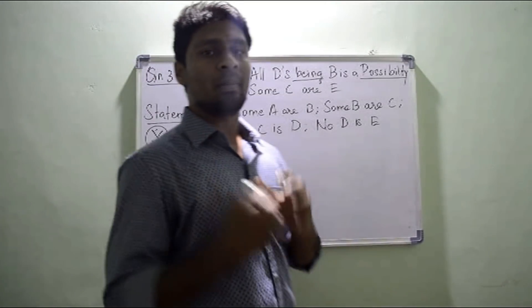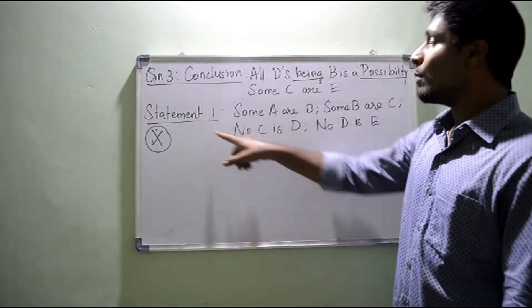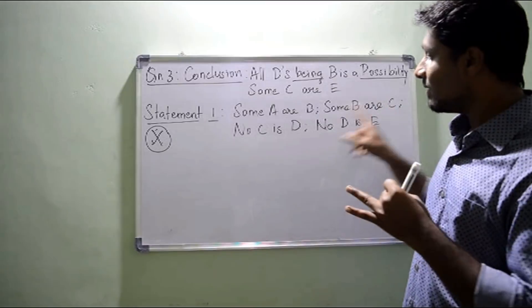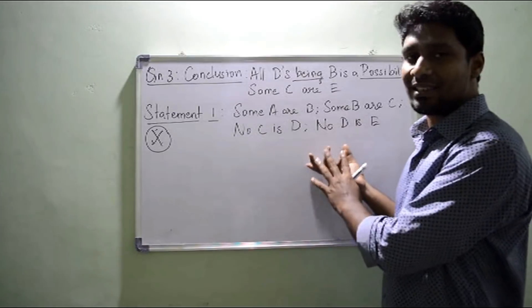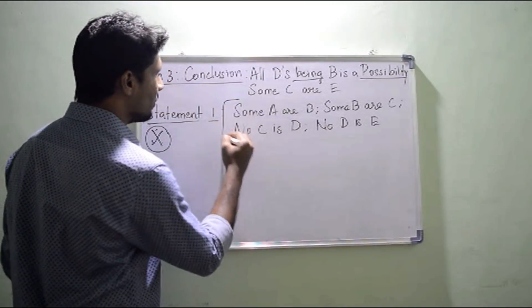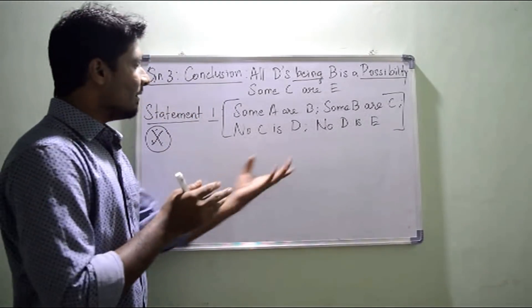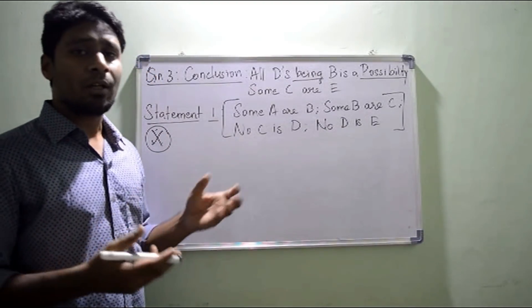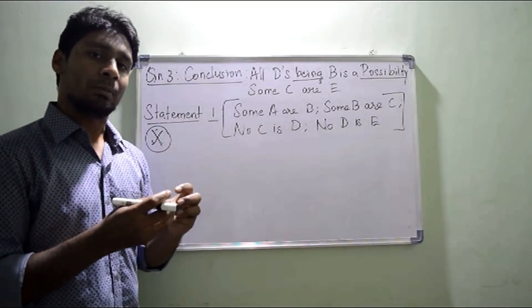Statement one has a lot of phrases: some A or B is one line, some B or C is the second phrase, no C is D is the third, and no D is E is the fourth. As I said before, we should always consider the single statement as one statement. Now, how many diagrams can I draw for these four phrases? If there are four phrases given, there are numerous possible diagrams.